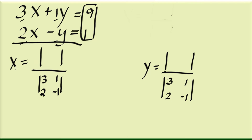Now for the x numerator: this is an x term, so we're not going to use the coefficients of x. Instead, we use the constants 9 and 1 in place of them. For the y numerator, we're not going to use the y coefficients either — instead, use 9 and 1 in place of those coefficients. To complete the second column for x, look down and copy 1 and negative 1. For the y numerator, copy paste 3 and 2 to complete that column.